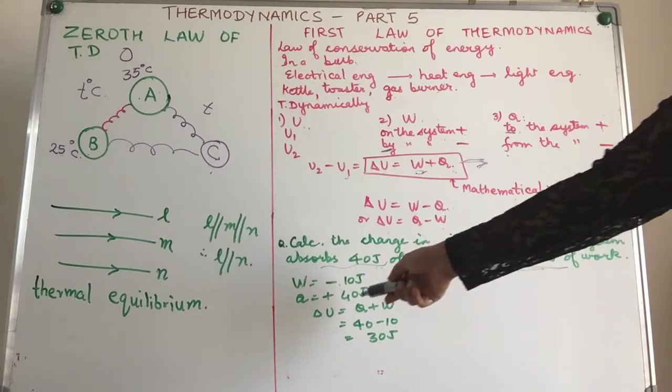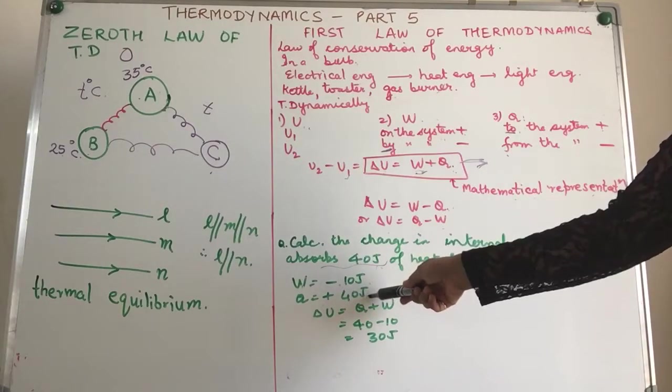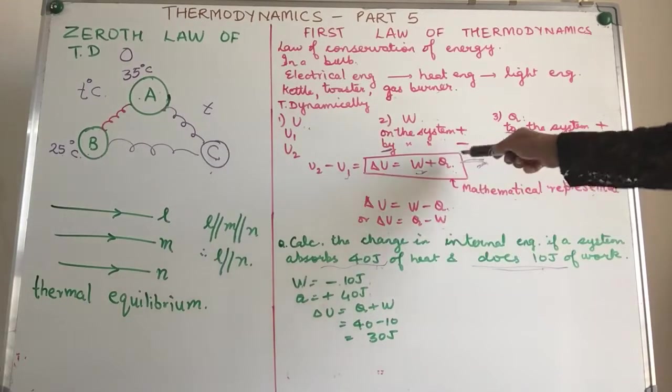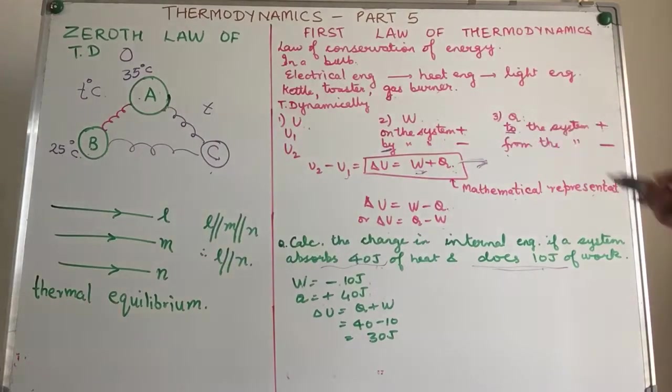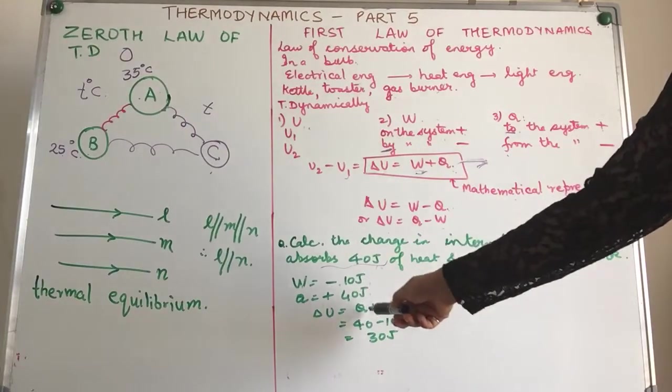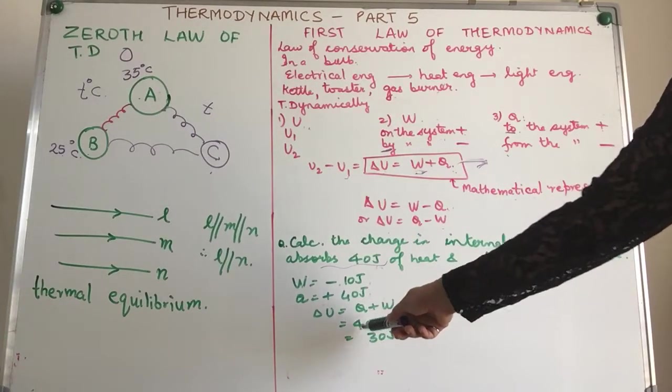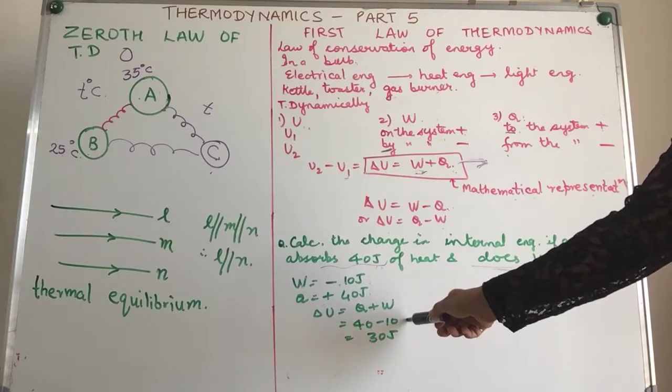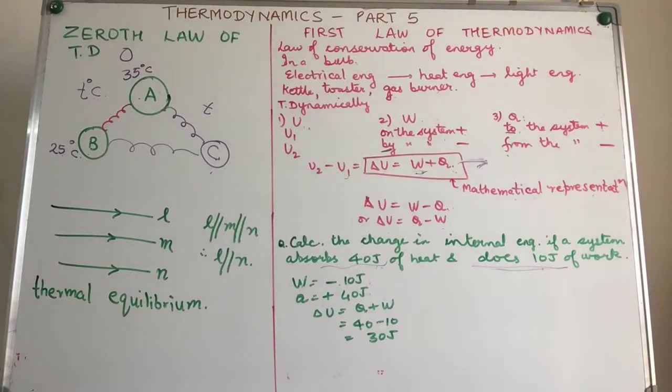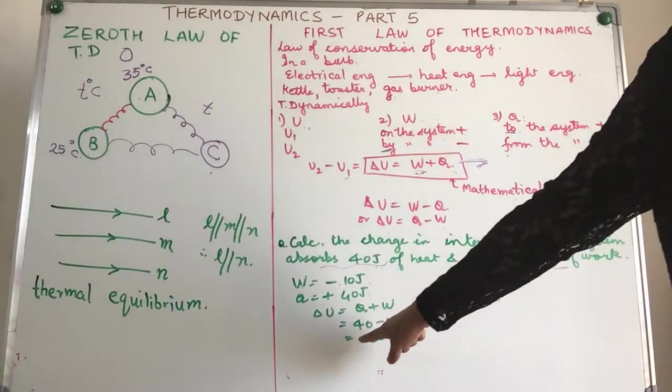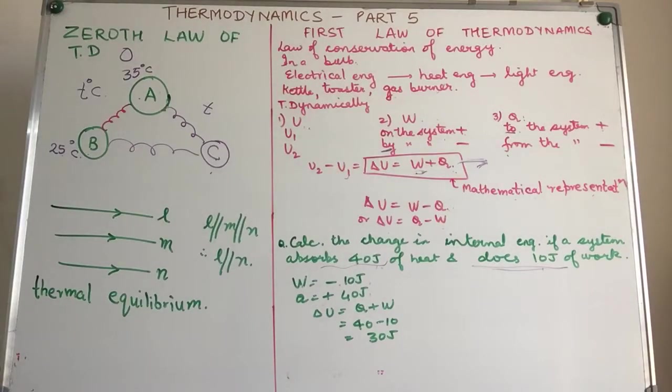Now, we will put these values in our standard equation that we have written over here. Delta U is equals to W plus Q or Q plus W. So, delta U is Q is 40 joules plus minus 10. So, plus minus, 40 minus 10 gives me 30 joules. In other words, there is an increase of 30 joules of internal energy of the system since we are getting a positive value over here indicating that there is an increase in internal energy.